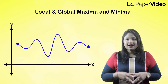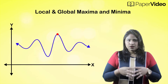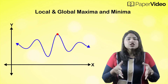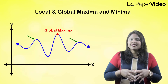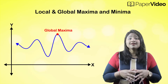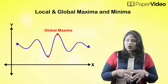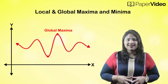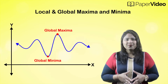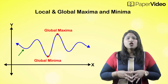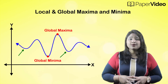Consider this curve again. The highest point on this entire curve is this point. So we call this point as Global Maxima, which means that this is the highest point of the entire curve and there is no other maxima which is higher than this point. Similarly, the lowest point on this entire curve is this point. So we call this point as Global Minima, which means that this is the lowest point on the entire curve and there are no other minima which is lower than this point.